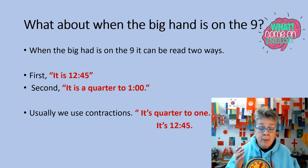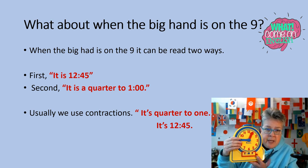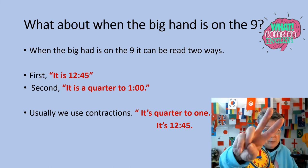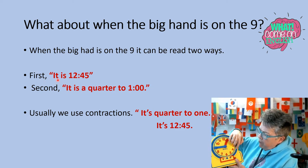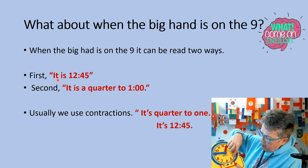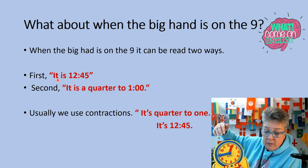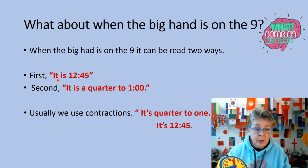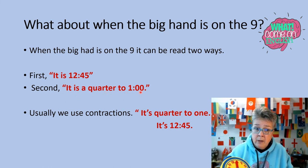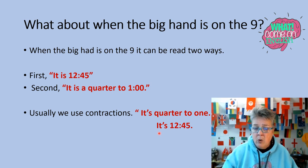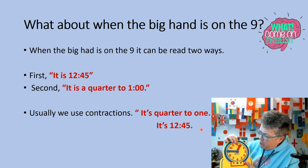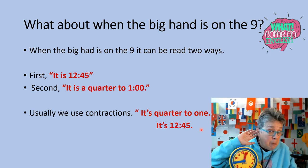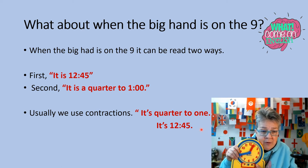What about when the big hand is on the nine? When the big hand is on the nine, it can be read two ways. First, it is twelve forty-five — because we have twelve fifteen, twelve thirty, twelve forty-five. We're skip counting by fifteen. It is twelve forty-five. Or you can say, it is a quarter to one. We usually use contractions. It is a quarter to one, or it is twelve forty-five. It is not on the one, but it is between the twelve and the one. It is a quarter to one.